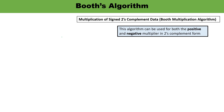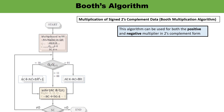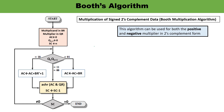Now let us discuss the flowchart for multiplication of signed two's complement numbers. This algorithm works for both positive and negative numbers. Initially, the multiplicand is in register BR, the multiplier is in register QR, the sequence counter is set to n (the number of bits in QR), the accumulator AC is cleared to zero, and the extra flip-flop QN+1 is also set to zero.